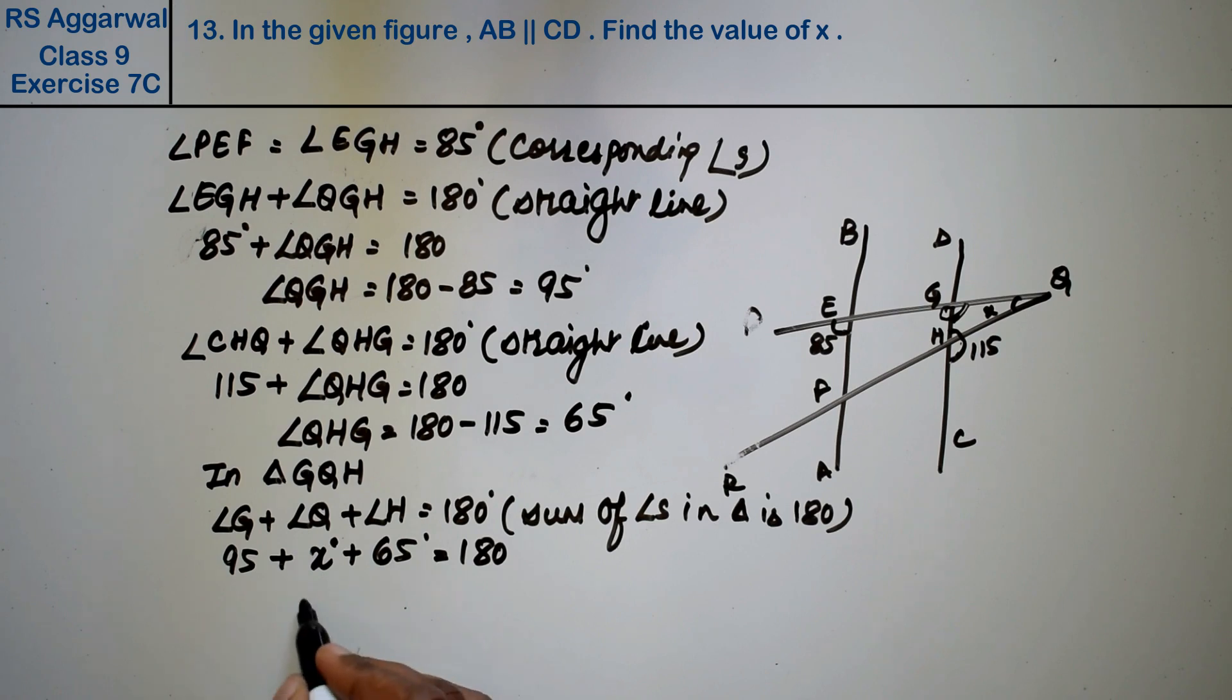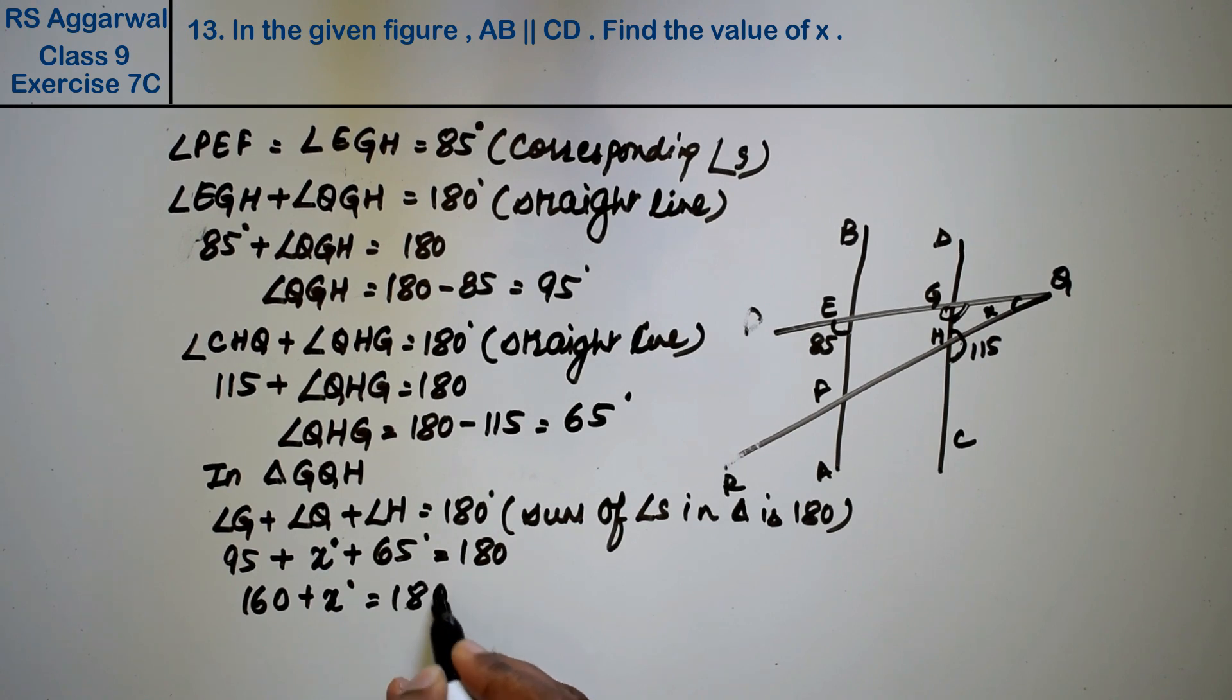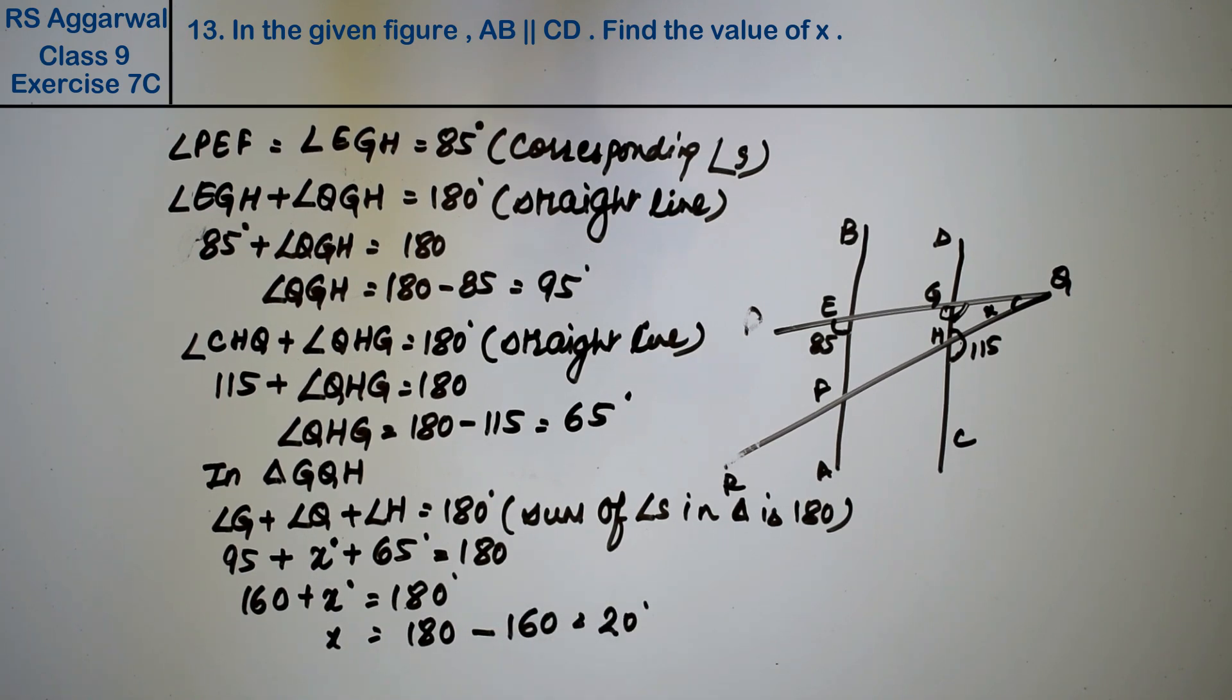How much is this? 95 plus 65 is 160, plus x degrees equals 180. How much is this? 180 minus 160, that is 20 degrees, the answer.